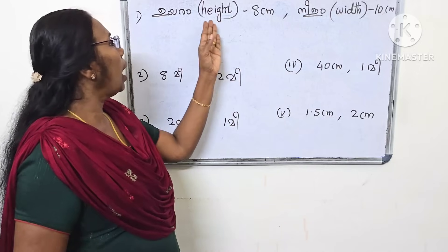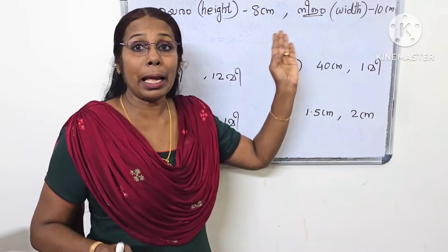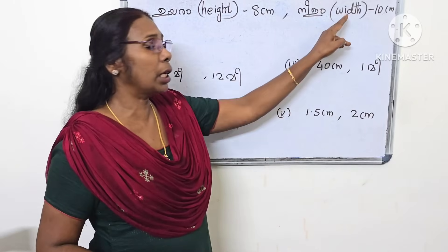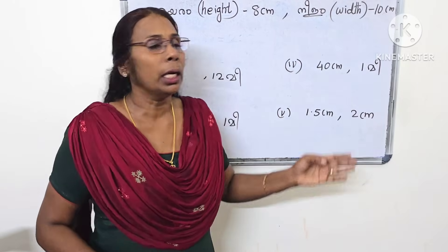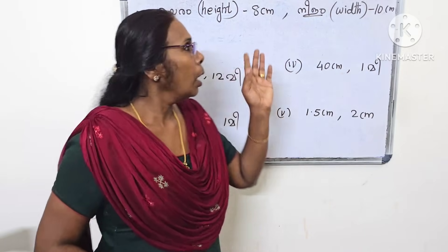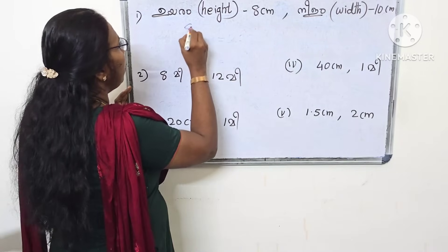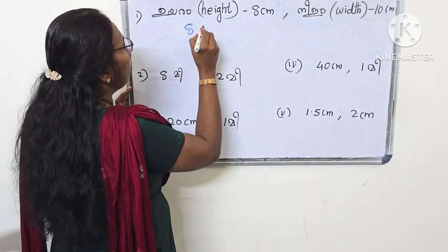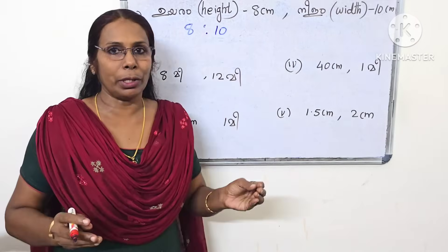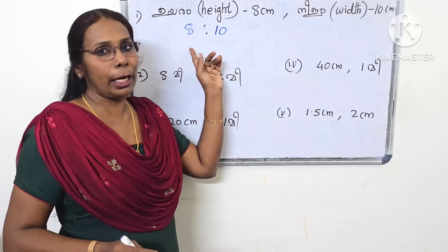The height is 8cm. The width is about 10cm. So the ratio is about 8 to 10.